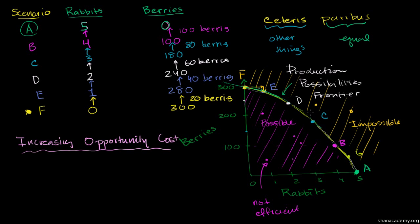And so this, whenever you see a bow-shaped curve like this, so a curve that literally looks like this, this shows that you have increasing opportunity cost. As you increase more and more units, you're going to have to give up more and more of the alternative.